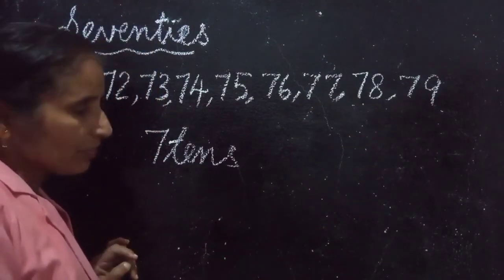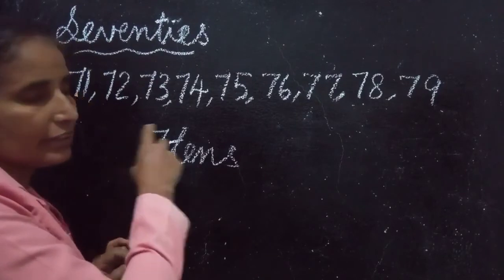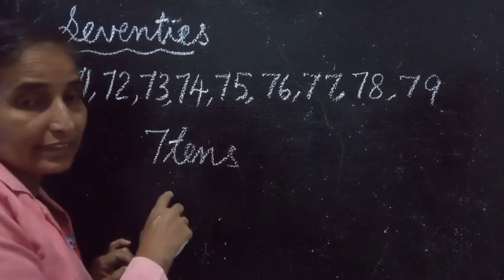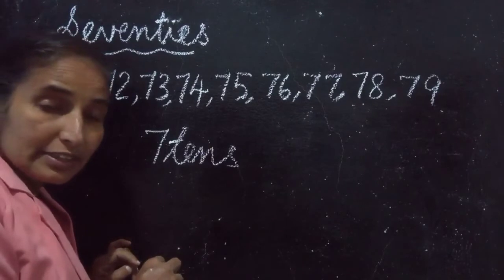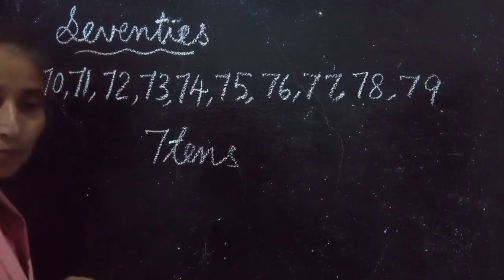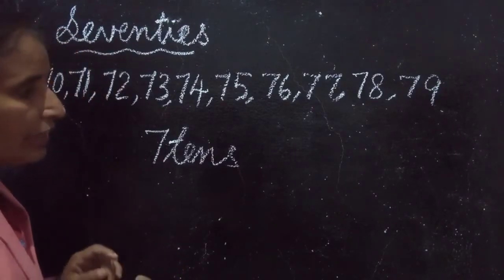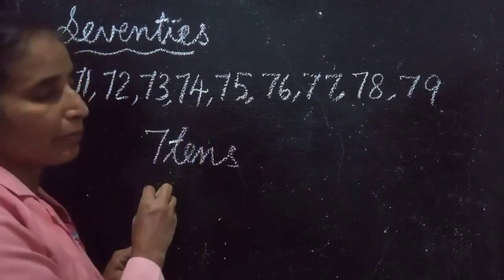Learned it now. So all these numbers are having 7 tens. So they are called 70s. And now the number name.